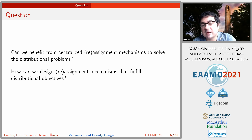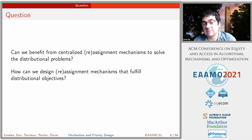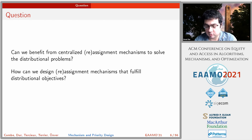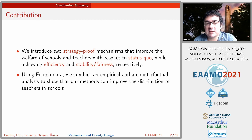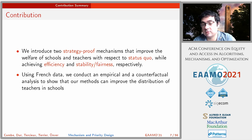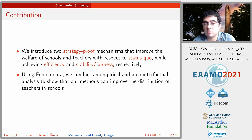We ask: can we benefit from the mechanism itself to solve these distribution problems, and if yes, how can we design a reassignment mechanism that fulfills distribution objectives? For example, in the French case, the Ministry of Education may want more experienced teachers assigned to schools with more disadvantaged students. The answer is yes: we introduce two strategy-proof mechanisms where teachers report preferences truthfully, improving welfare of both schools and teachers while also achieving efficiency and stability.